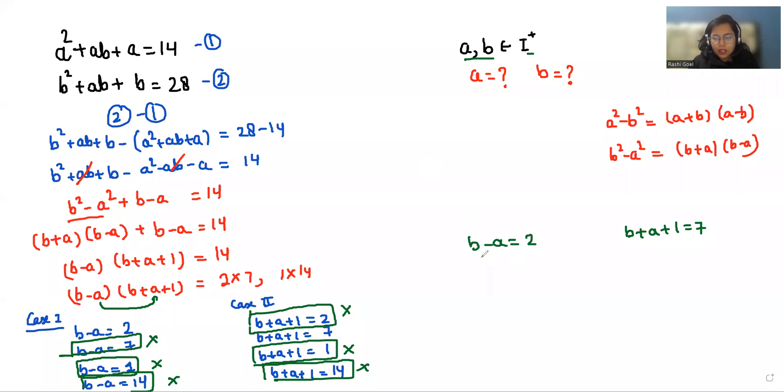So when b - a = 2, so b = 2 + a. If we put here 2 + a + a = 6, then 2 + 2a = 6, so 2a = 6 - 2, so 2a = 4 and a = 2. So b = 2 + 2, so b = 4. So the value of a is 2 and the value of b is 4.